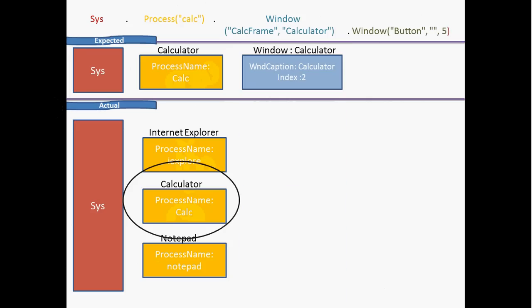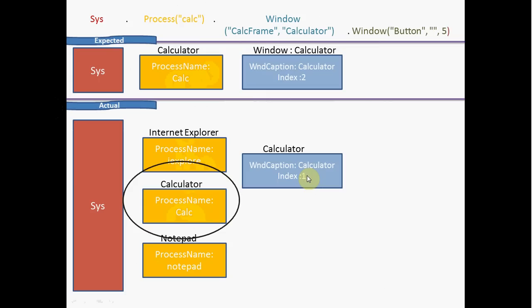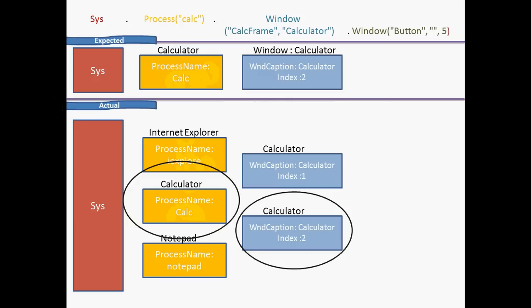The expected calculator window properties are WndCaption and index. The first calculator's WndCaption is 'calculator' and the expected index is 1, but the index doesn't match — so TestComplete assumes this is not the expected window and moves to the next calculator. For the second calculator, the caption matches and the index is 2, which also matches the expected index of 2. TestComplete now understands this is the expected window.